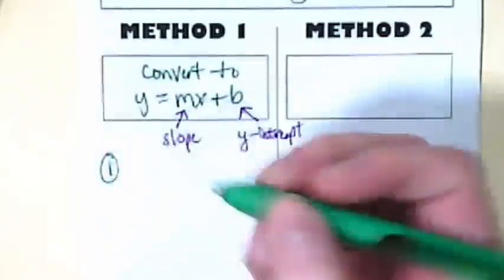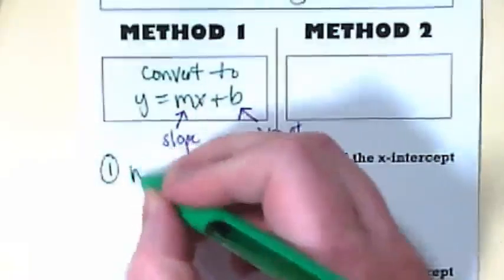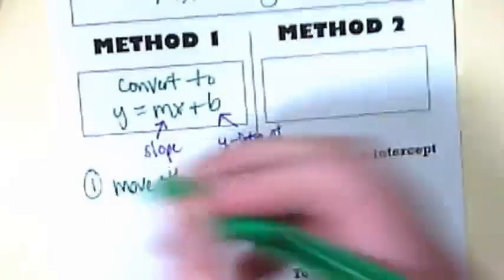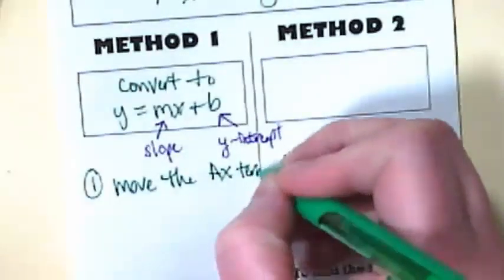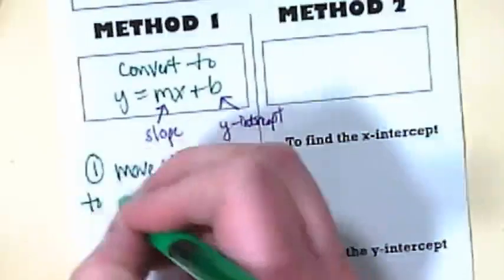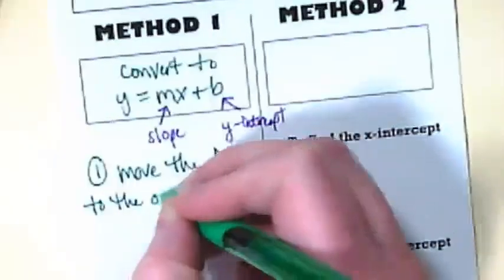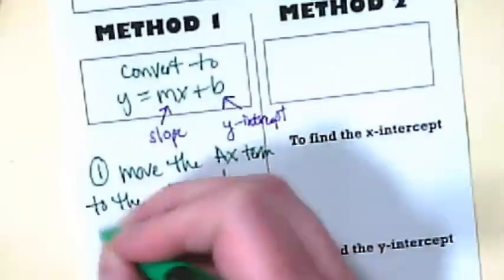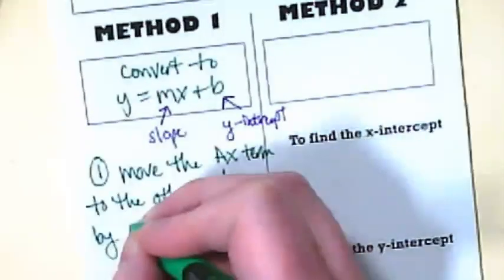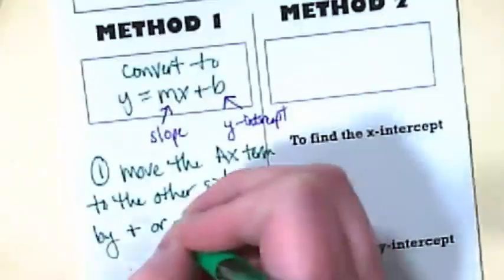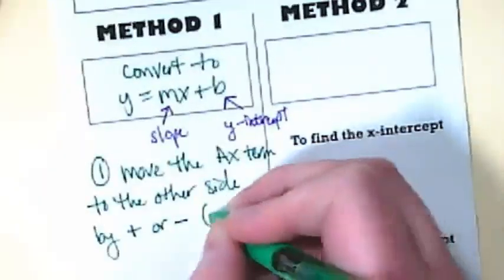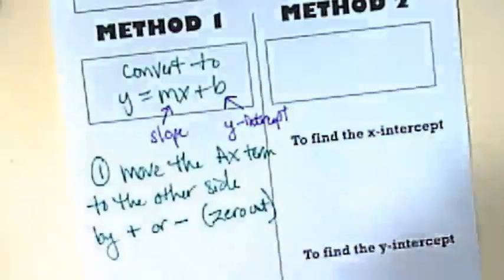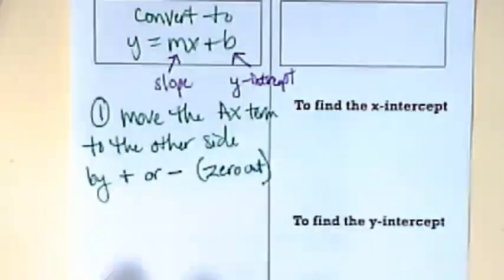So our step one. Move the ax term to the other side of the equation by addition or subtraction. This is what we've been referring to as zeroing out a term in our equations.